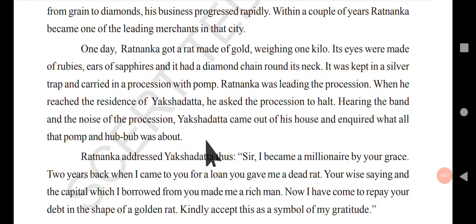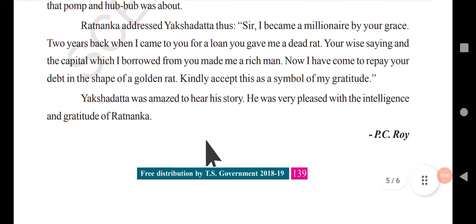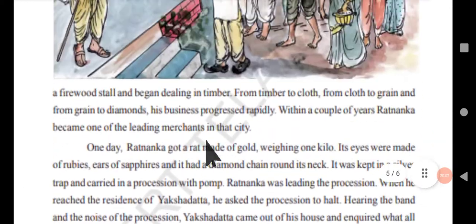After this boy became rich in the city, one day he took a gift — a rat made of gold of one kilo. The eyes were rubies, the ears were sapphires, and there was a diamond chain around the rat's neck. All this was kept in a silver trap, with a musical band procession. Akshadatta came out and asked what it was all about. If you can see the picture, you can find the merchant pointing to the dead rat, and later the boy's attire completely changed.